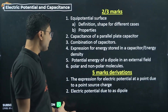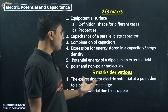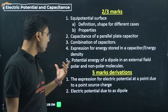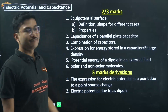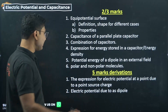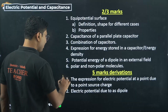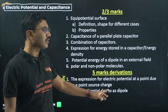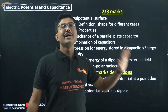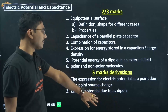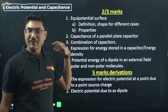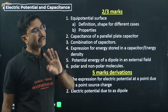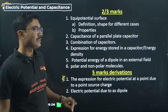Potential energy of a dipole in an external electric field, and polar and non-polar molecules — their differences and definitions — are very important. The expression for electric potential at a point due to a point source charge is one of the most important derivations from this chapter. The second derivation, electric potential due to a dipole, you can skip if you have not studied it, but revise it if you have.